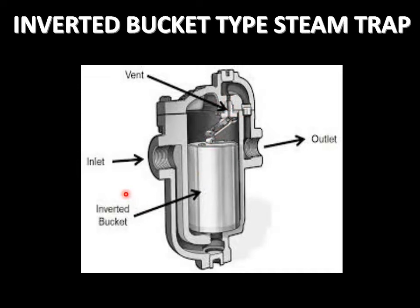Now initially, when the entire body of the steam trap and the bucket is filled with steam condensate, the bucket will be submerged. In this position, this port will be opened, so as more and more steam enters and gets condensed, the condensate will flow through this port.